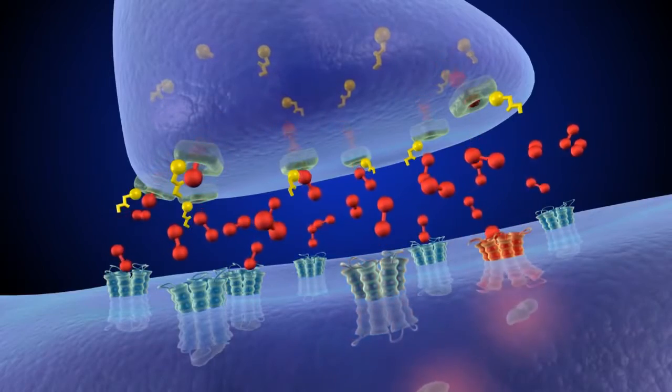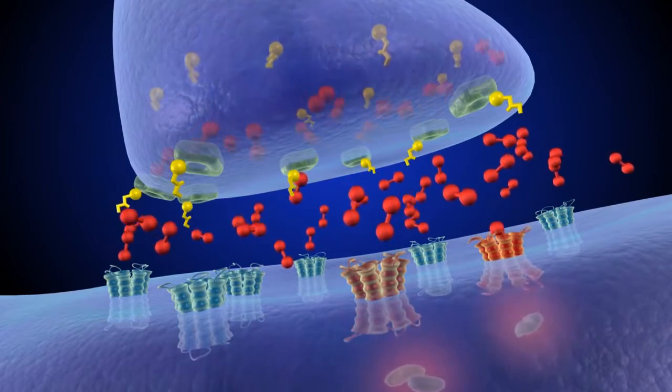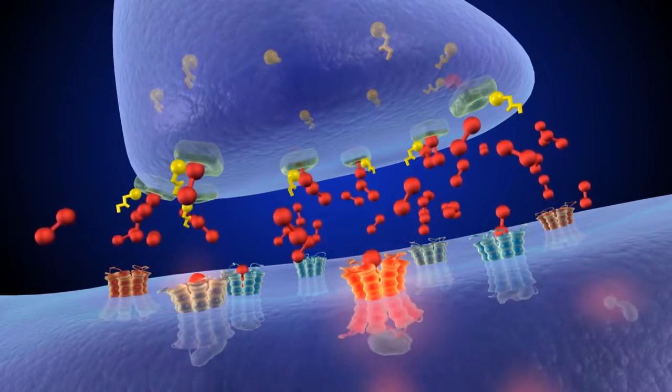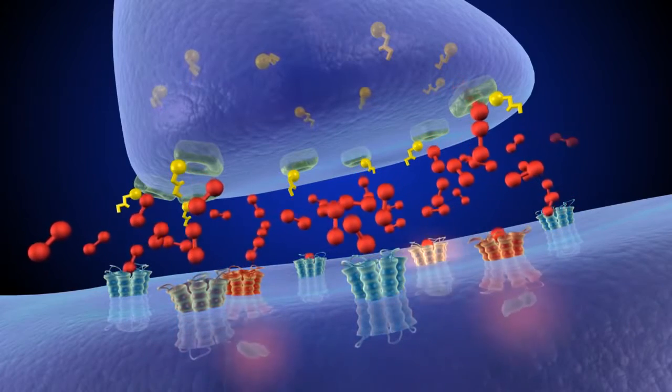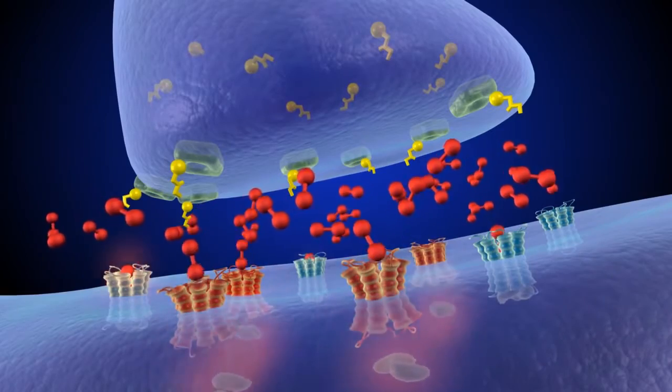Because so much dopamine remains in the synapse for such long periods of time, the postsynaptic cell is activated to dangerously high levels, causing the user to experience powerful feelings of euphoria, making meth incredibly addictive.